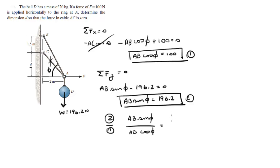So dividing these equations, you get 196.2 over 100. So AB cancels out, sin of phi over cosine of phi is tangent of phi, and this is equal to 1.962. So when you solve for phi, you get phi is equal to 63 degrees.